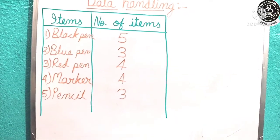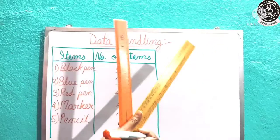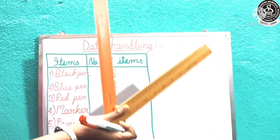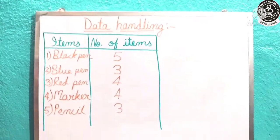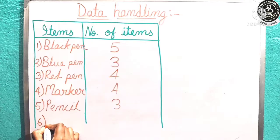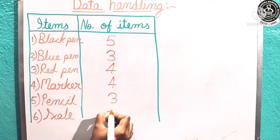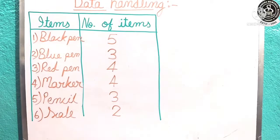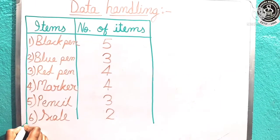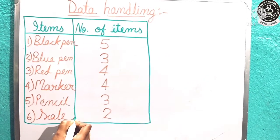And the last thing I have, that is scale. And I think you can easily count 1 and 2. I have 2 scale. I can write it here. Number 6 item, that is the last item: Scale, or you can write ruler also. Now I am going to close this box. I have collected the data of the given item.